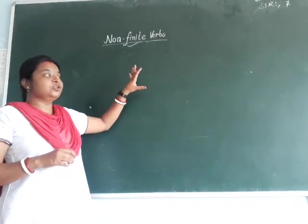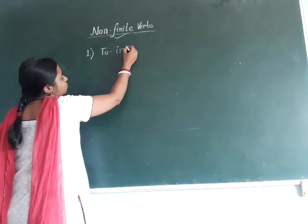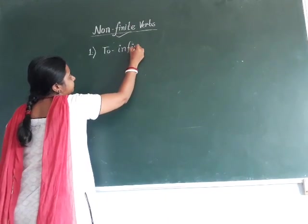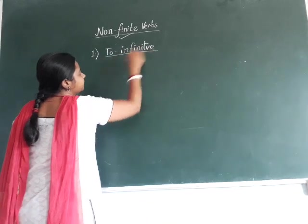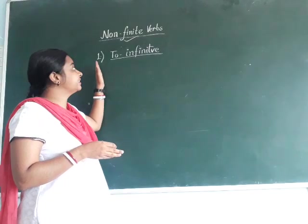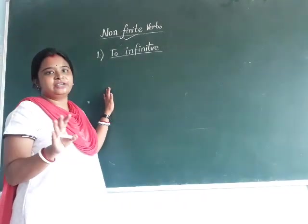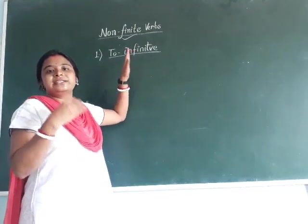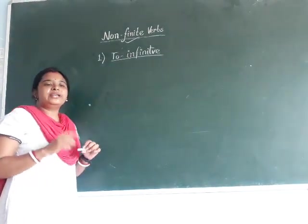I will go to the types of it. The first one is to-infinitive verbs. There are three types of non-finite verbs. In all these three types, you cannot identify the tense of that sentence.